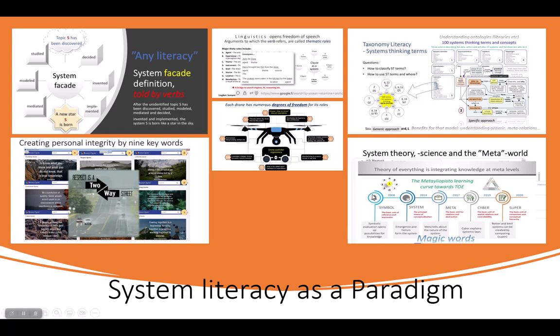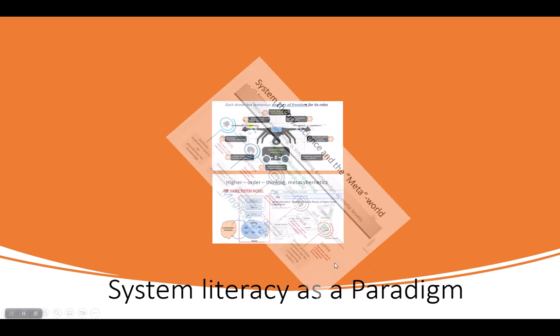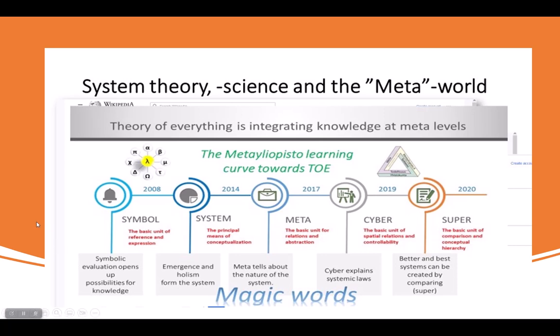The theory of everything is integrated knowledge at meta levels. This is about high level, higher order thinking. Meta-cybernetics is one example. How society can be organized in a new way using the viable system model. System is a basic unit of reference and expression, the principal means of conceptualization. Meta is the basic unit for relations and abstraction. Cyber is the basic unit of spatial relations and controllability. Super is the basic unit of comparison and conceptual hierarchy.